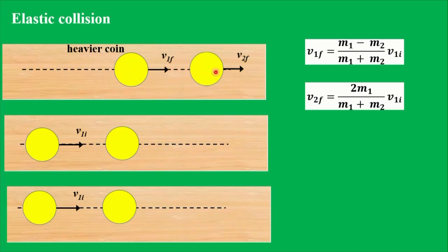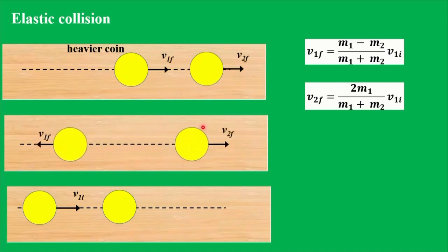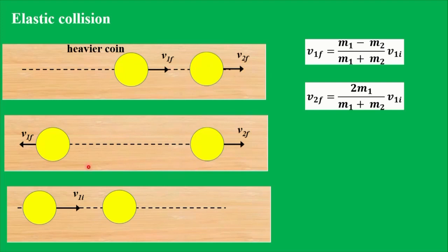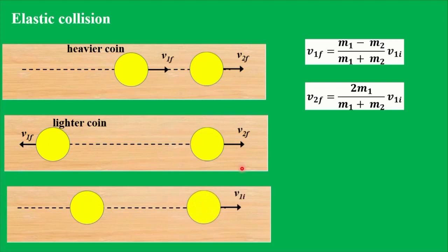In the second case, the coins after collision move in opposite directions, so V1 final is negative, meaning M1 is smaller than M2 — this coin is the lighter coin. Again, the false coin is one of these two. And finally, the third possible case is when the first coin (the projectile) stops after the collision and the target moves with the initial velocity of the projectile. In this case, the masses of the two coins are equal, and for this reason both of them are genuine.